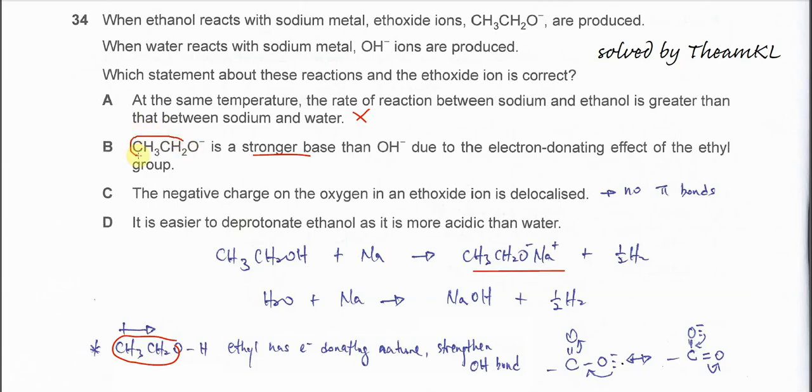Again, it has electron-donating effects. So the electron density on the oxide becomes greater. Therefore, this oxide or this ethoxide is more likely to react or donate the electrons to the proton. So it's going to be a stronger base. It's more likely to react with H+ because electron density on the oxide is much greater now.